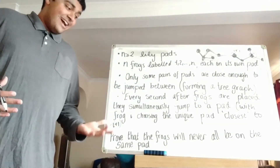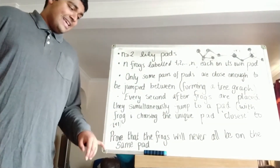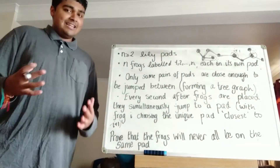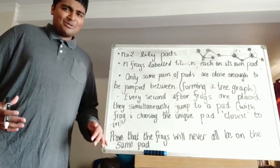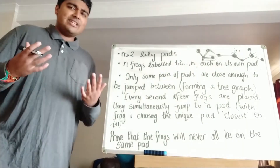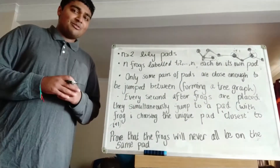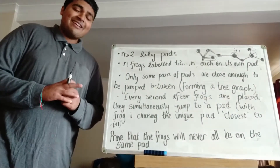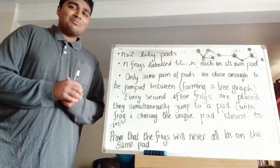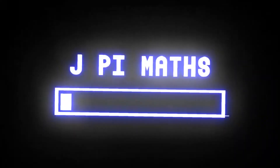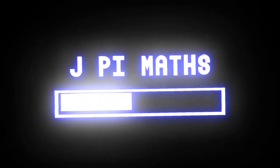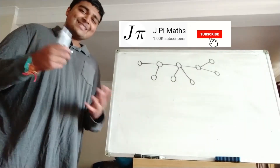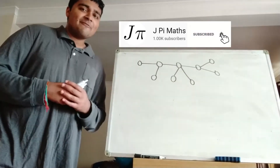The thing we want to solve for part one is: prove that the frogs will never all be on the same lily pad. If you want to have a go at the problem, pause the video now and give it a go for yourself — I'm going to jump straight into a solution. The solution to this problem is surprisingly short but very elegant.